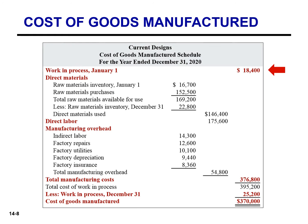Let's assume that on January 1st, Current Designs has a number of kayaks in various stages of production. In total, these partially completed units are called beginning work in process inventory. The costs the company assigned to the beginning work in process inventory are based on the manufacturing cost incurred in the prior period, and that cost is $18,400.